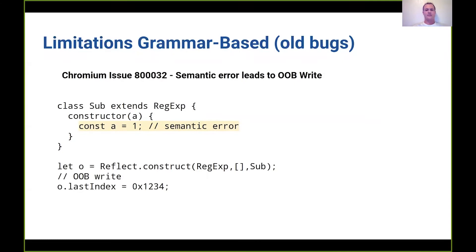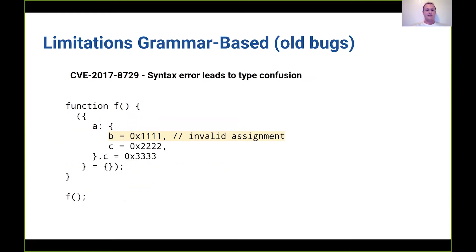If we take a look at a couple of old Chromium bugs: here's one where a semantic error — assigning to a const variable that was shadowing a variable in the function — is not allowed in JavaScript, but doing this led to an out-of-bounds write. And here's another syntax error where an invalid assignment led to a type confusion in the JavaScript engine.